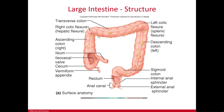The large intestine is named because its diameter is large, not because of its length. The small intestine had a small diameter but was really long. The large intestine has a larger diameter but is actually shorter. The large intestine forms a perimeter around the abdominal cavity.